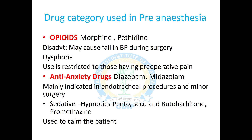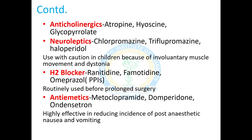Anti-anxiety agents include benzodiazepines and barbiturates, used mainly to calm the patient. Anticholinergic agents decrease secretions. Neuroleptic agents are used with caution in children due to involuntary muscle movements and dystonia. H2 blockers — ranitidine and famotidine — and proton pump inhibitors like omeprazole are used to control acid content and are routinely used before prolonged surgeries. Anti-emetic agents — metoclopramide, domperidone, and ondansetron — are highly effective in reducing the incidence of post-anaesthetic nausea and vomiting.